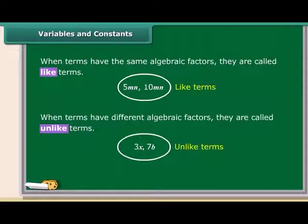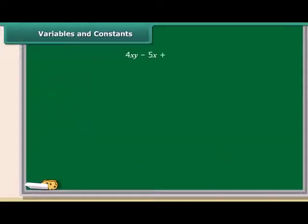We have an expression, 4XY minus 5X plus 3XY plus 2. Now, look at the terms 4XY and 3XY. The factors of 4XY are 4, X and Y.